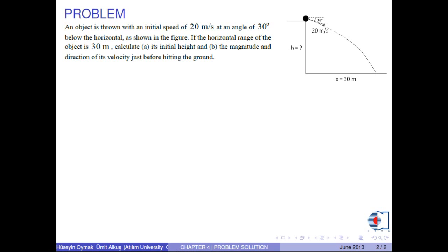An object is thrown with an initial speed of 20 meters per second at an angle of 30 degrees below the horizontal. If the horizontal range of the object is 30 meters,